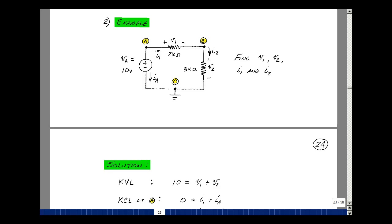Okay, what else can I do? Well, I've also got Ohm's law. And so the voltage V1 is equal to I1 times 2k. Likewise, the voltage V2 is I2 times 3k. Okay, so let's use all that information to solve for our four unknowns.